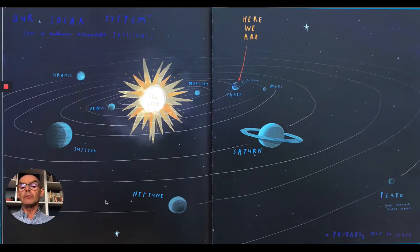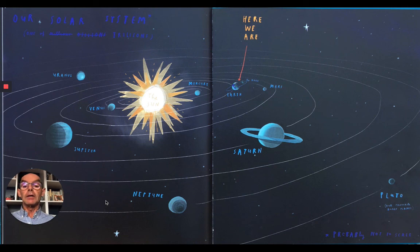Our solar system. You can see Oliver's pointed out where we are. Here we are. Can you see the Earth? There's a little red arrow there. But all the other planets are here as well. We've got Mercury and Venus and next to the Earth is Mars of course. Jupiter very big. Saturn on the other side, Uranus and Neptune. And right over in the corner there's Pluto, our favourite dwarf planet. And it's probably not to scale. That means they're not as close as they look, the planets, in reality.